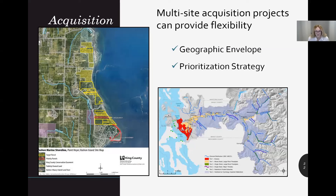If your project is to purchase property from multiple owners and meets salmon recovery program goals, consider proposing a multi-site acquisition project. These properties ideally should be contiguous, and each should contain similar conservation values. For multi-site acquisition projects, you'll need to provide a map of the geographic envelope and a prioritization strategy so we know which parcels you're targeting and in what order. The map on the right is from the Skagit Watershed Council Protection Strategy, illustrating tiered target areas for habitat restoration and protection in the Skagit River Basin.